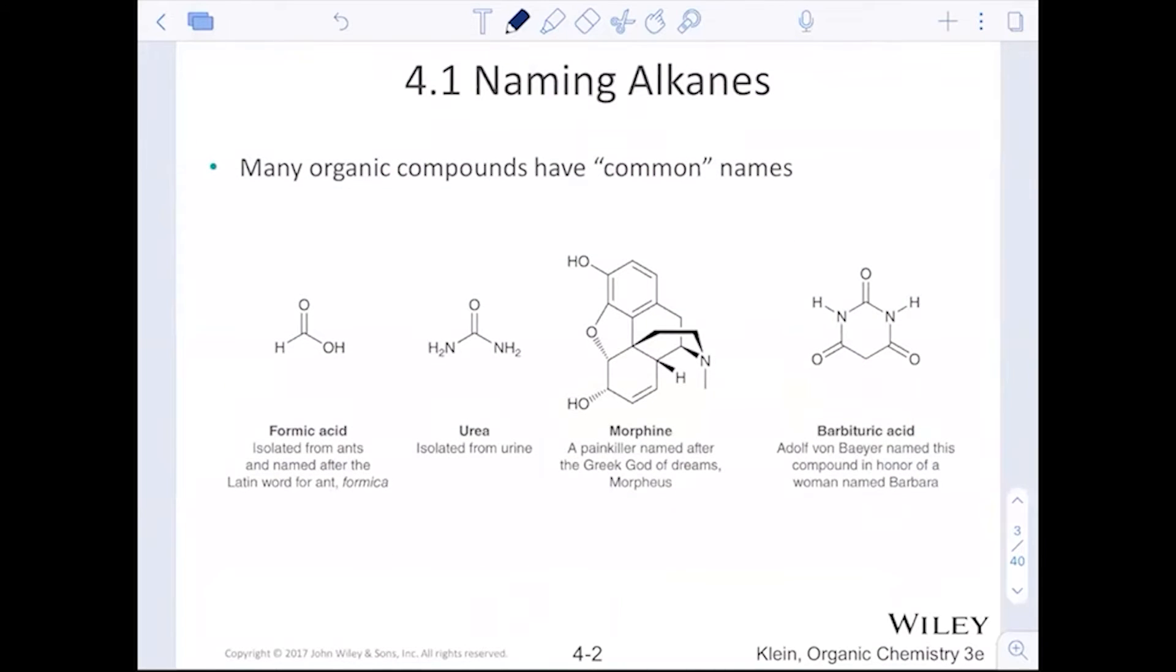Just to present some ideas of some common names, we use a lot of common names in chemistry pretty much because organic chemistry is relatively new when we think about the depth of science and the history of science. Many organic compounds have common names. Formic acid, this first one on the left, ants actually produce formic acid within them. And so when this compound was isolated from ants, they named it formic acid because of the Latin word for ants, which is formica.